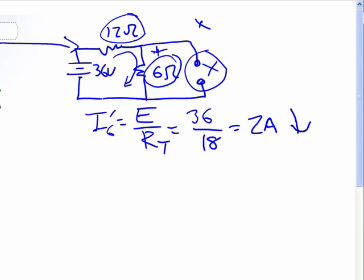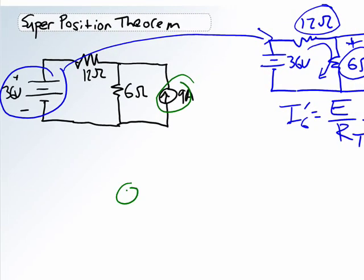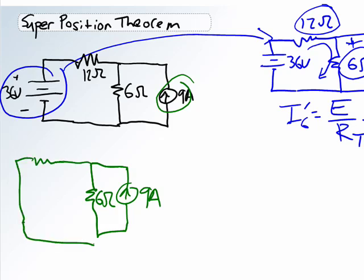So we're going to redraw this here from the current source perspective. 9 amps hooked up with a 6-ohm resistor with a 12-ohm resistor. And we've replaced our 36-volt source with a short circuit. So now, because that short circuit exists right there, what we've got is a situation where current is going to come out of the 9-amp source, go this way, and it's going to go that way.